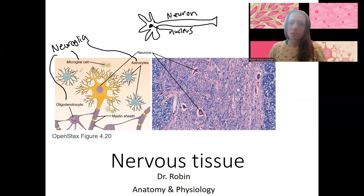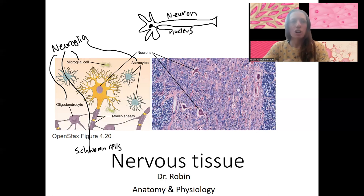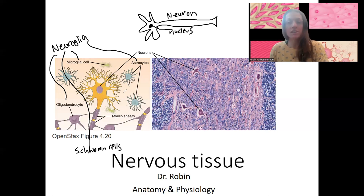We're going to go over the types of neuroglia. Schwann cells are the fourth type of neuroglia not listed here. We're going to talk more about them and go over each type and what it does when we get to the chapter on neurons. All five of these cell types are cells that make up nervous tissue.